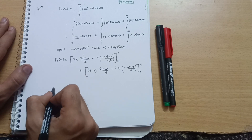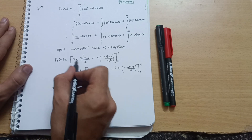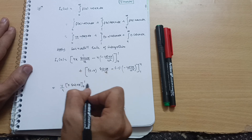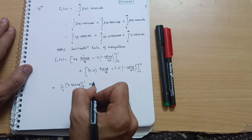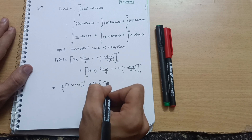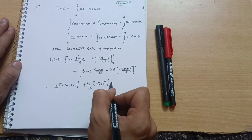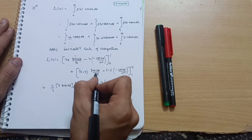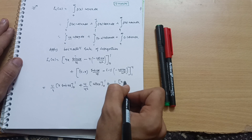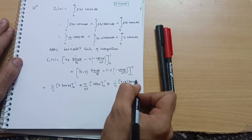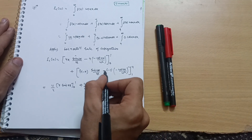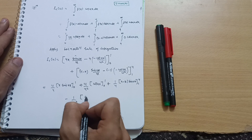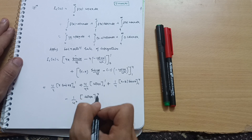Simplifying, I can write: (4/u) · x·sin(ux) with limits 0 to 1, plus (4/u²) · cos(ux) with limits 0 to 1. Then (1/u) · (4 − x)·sin(ux) with limits 1 to 4, minus (1/u²) · cos(ux) with limits 1 to 4.